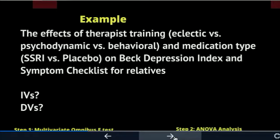You have a two-by-three MANOVA. The dependent variables are the Beck Depression Index and a symptom checklist filled out by relatives. The independent variables are therapist training and medication type, making it a three-by-two design — though most of the time you'd write it two-by-three, putting the smaller number first. It doesn't really matter which one goes first, and you have two dependent variables to check.